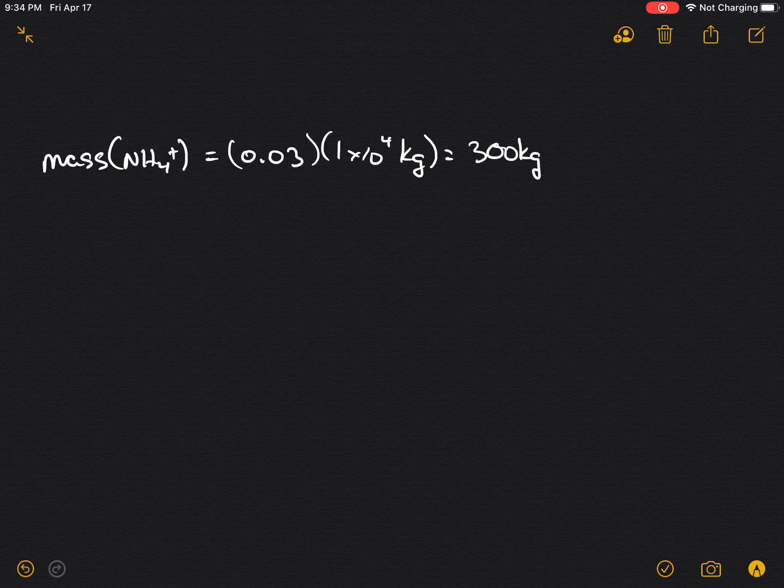For this question, we're going to start by calculating the mass of NH4+, which is 3%. So this would be 0.03 times the initial amount, which is 1 × 10^4 kilograms, which will yield 300 kilograms.